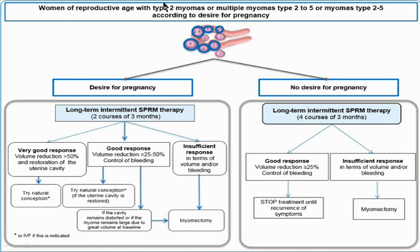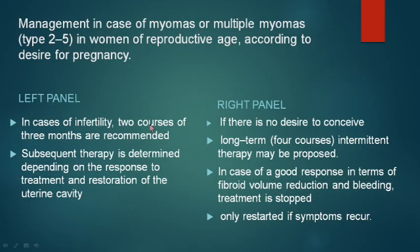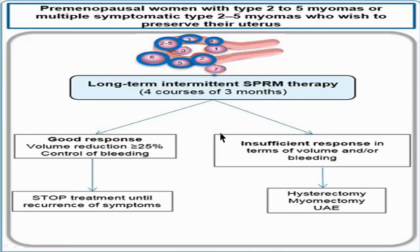For reproductive age group with type 2 to type 5 myomas who do not desire pregnancy, treatment is similar to postmenopausal or perimenopausal women who do not desire pregnancy. Give a long-term intermittent course — 4 courses of 3 months — and assess the response. If insufficient, do surgical myomectomy. If there is sufficient good response, stop treatment and follow up the patient for recurrence of symptoms.